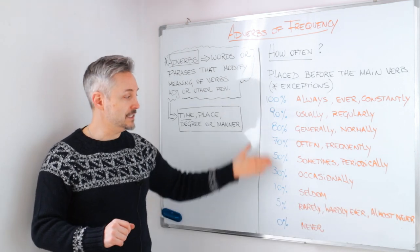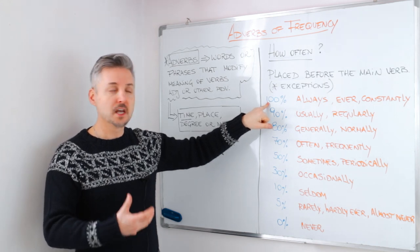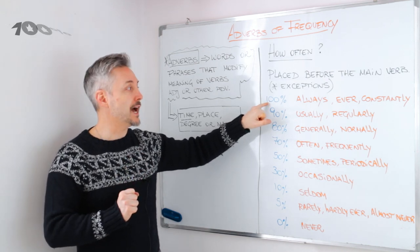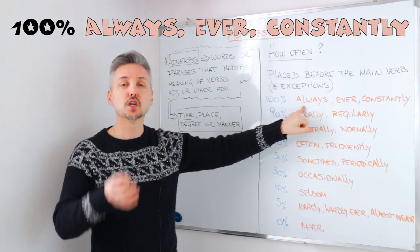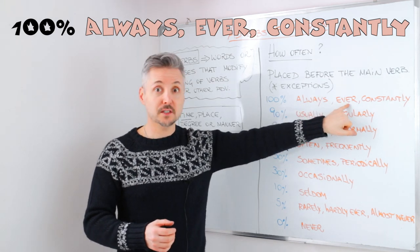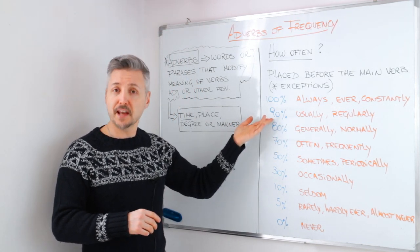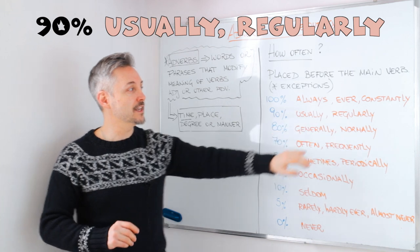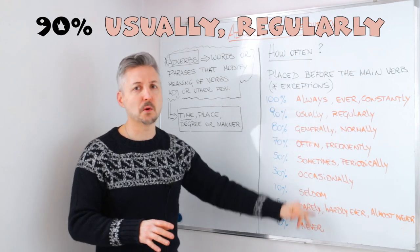I listed some of them with a degree or a percentage just to show you how to use them. A hundred percent — you would use 'always.' So every day, for example, 24-7, which means always, 'ever' in questions, for example, and 'constantly.' Then we have 90%, which is 'usually' — usually, but not always — and 'regularly,' and so on. There are many others, but I'm just going to list the most important ones.